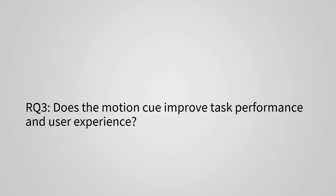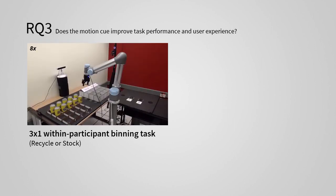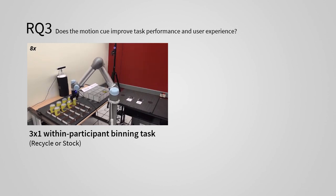Our third research question is whether the motion cue improves task performance and user experience. For this, we designed two tasks similar to the previous tasks. The cans used in this task were visually similar and weighed the same. In the first task, participants categorized cans into two bins, recycle or stock, based on the perceived weight of the can. Lighter cans going to recycle, while heavier ones going to stock.